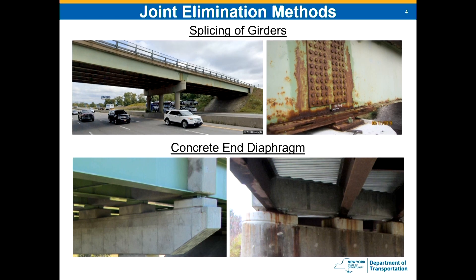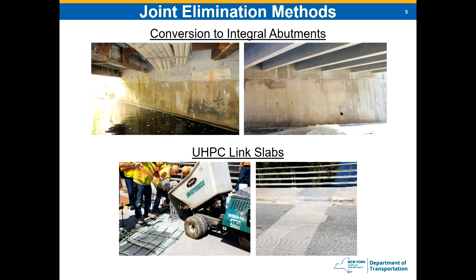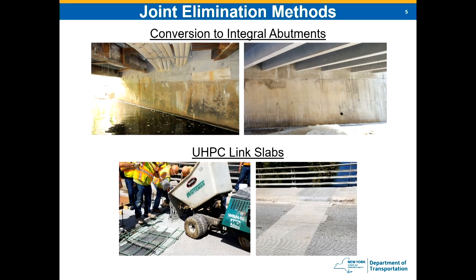The next method shown on the bottom is encasing everything in a concrete diaphragm, which eliminates the issues with misalignment of girders — but you're still adding continuity, so that's a drawback. Another method is converting a conventional abutment to an integral abutment — a great technique — but it's really limited to shorter spans. Our rule is about 50 feet; once you go over 50 feet, thermal movements introduce a lot of stresses into the abutments and foundations that they weren't designed for. The last method is our go-to: UHPC link slabs, which I'll discuss further.